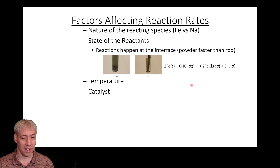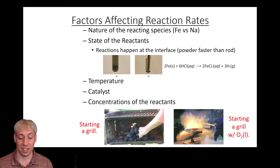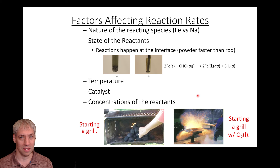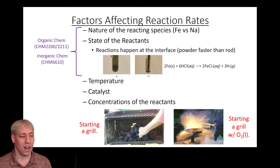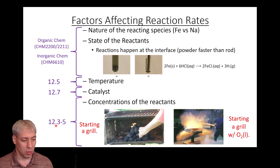Other factors include temperature, catalysts — which speed up a reaction without changing the reactants and products — and concentration of species. An example of concentration effects: in a grill-lighting contest, people poured liquid oxygen on the grill since oxygen is the limiting reagent, dramatically increasing the reaction rate. The nature of species and state of reactants are covered more in organic and inorganic chemistry. Temperature will be covered in section 12.5, catalysts in 12.7, and concentration effects in sections 12.3 through 12.5.